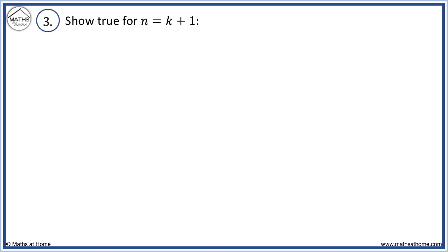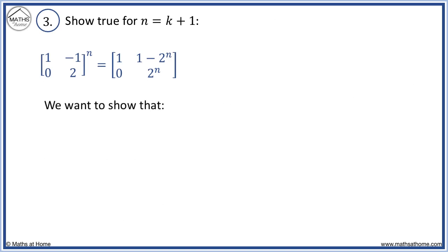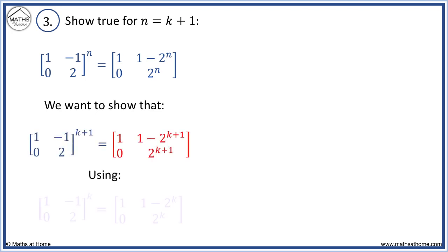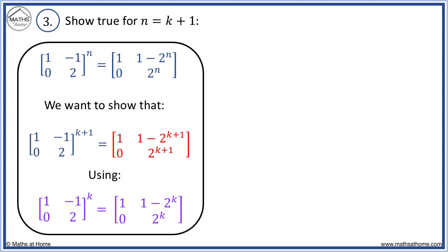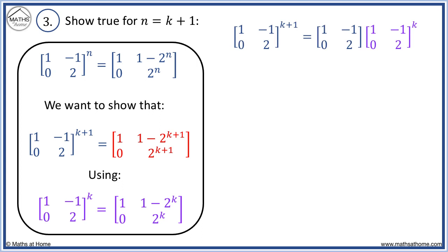Now we show it is true for n equals k plus 1. This is what we wish to prove. We want to show that substituting n equals k plus 1 into this expression is what we obtain using our previous assumption from step 2. We start by writing our matrix to the power of k plus 1 as the product of the matrix itself and the same matrix to the power of k, using index laws.